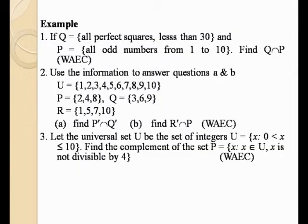Example number 3. The universal set U is a set of integers. U is equal to x such that 0 is less than x and x is less than or equal to 10. Find the complement of P, which is equal to x such that x is a member of U and x is not divisible by 4.